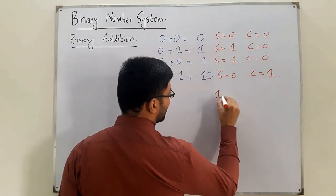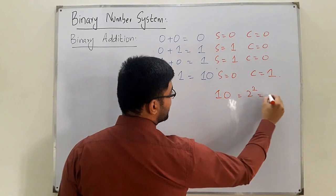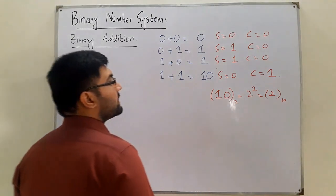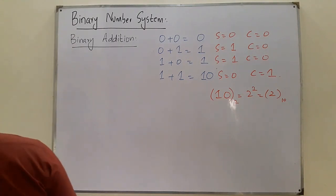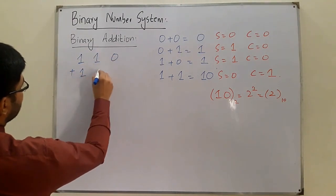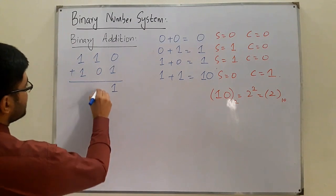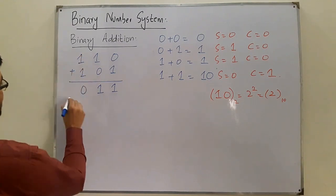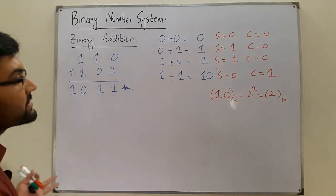For 1 + 1 = 10: 2 to the power 1 is high, giving 2 in decimal. Now an example: 110 + 101. Working right to left: 0 + 1 = 1; 1 + 0 = 1; 1 + 1 = 0 with carry 1. There is nothing above so the carry comes out here. The answer is 1011. This is binary addition.